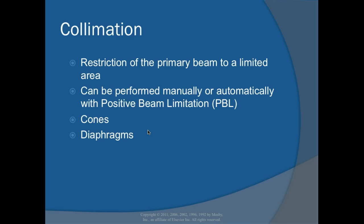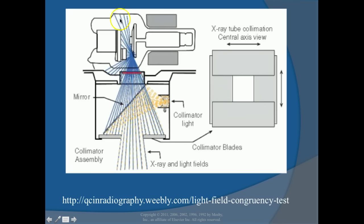Collimation restricts the primary beam to a limited area. It can be performed manually or automatically with PBL (positive beam limitation). Cones and diaphragms are used — diaphragms are on all tubes. The collimator has two sets of blades operating in perpendicular planes; the shutters close to shrink the beam down to just the size needed for the patient.